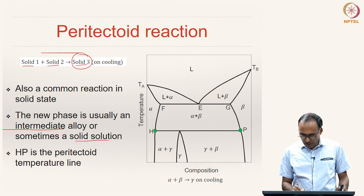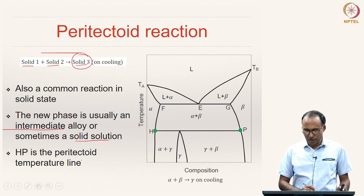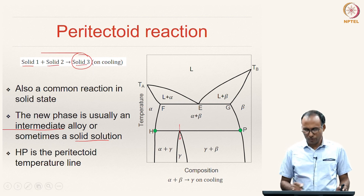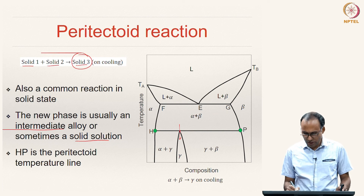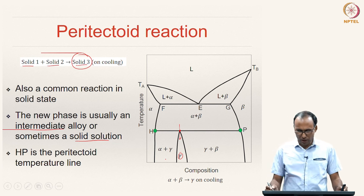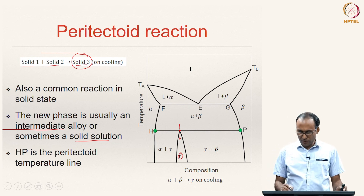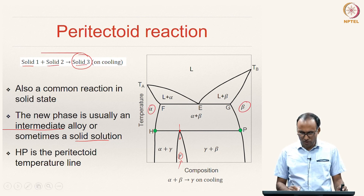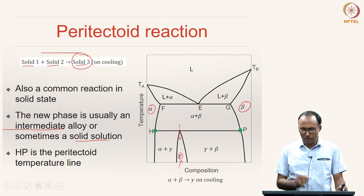This also helps explain why alpha and beta are called terminal solid solutions — because there is also an intermediate solid solution called gamma present in the system.